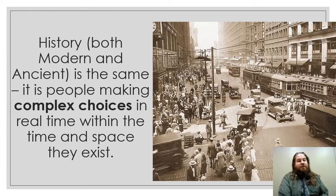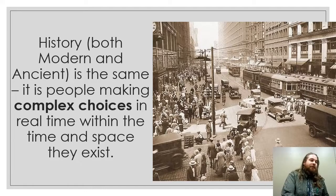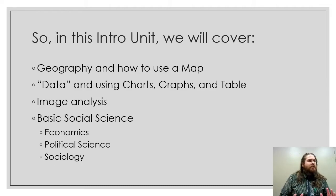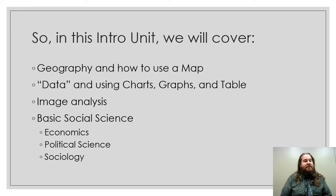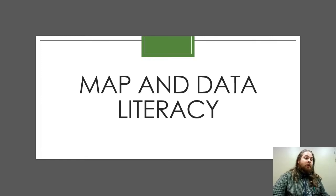When we look at history, we are looking at the same thing. It is people just like you who were born in a different time, making complex choices in the time and place where they lived. That's the most important thing — we have to place every event within the context surrounding it. In this intro unit, we're going to cover a couple of core skills: geography and how to really use a map; data using charts, graphs, and tables; how to analyze an image — be it a cartoon, a photograph, or a video; and the basic social sciences of economics, political science, and sociology. So buckle up — it's going to be a fun year. Our first stop is going to be map and data literacy, because this is going to help us in every single unit we look at this year.